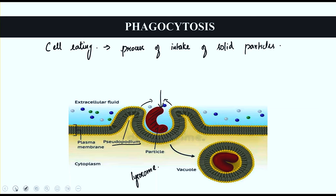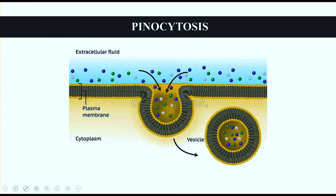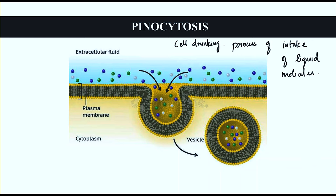Pinocytosis is also called cell drinking — it is the process of intake of liquid molecules. The plasma membrane forms a vesicle around the liquid molecules to bring them inside the cell. This vesicle helps the cell during metabolic processes and chemical reactions.